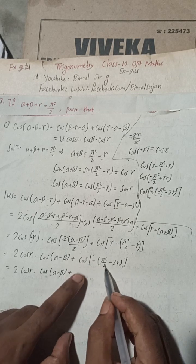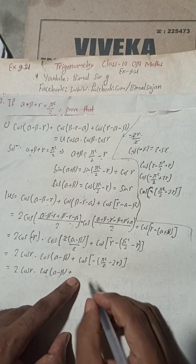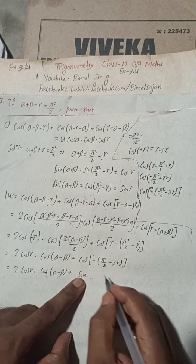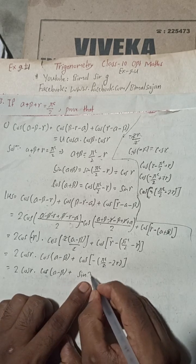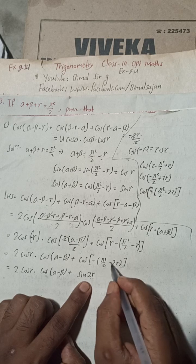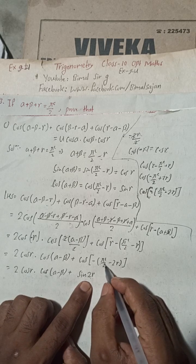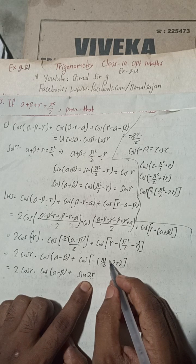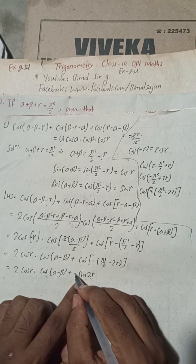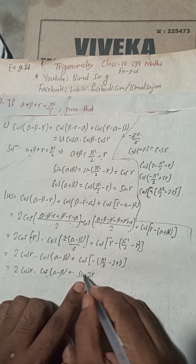For cos(pi/2 minus 2 gamma): cos of 90 minus theta gives sine theta, so cos(pi/2 minus 2 gamma) equals sine(2 gamma). Since 90 minus theta is in the first quadrant, this is positive.